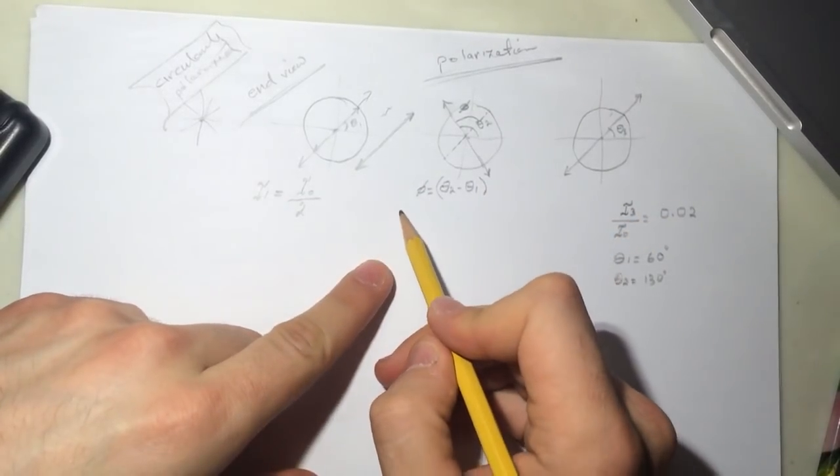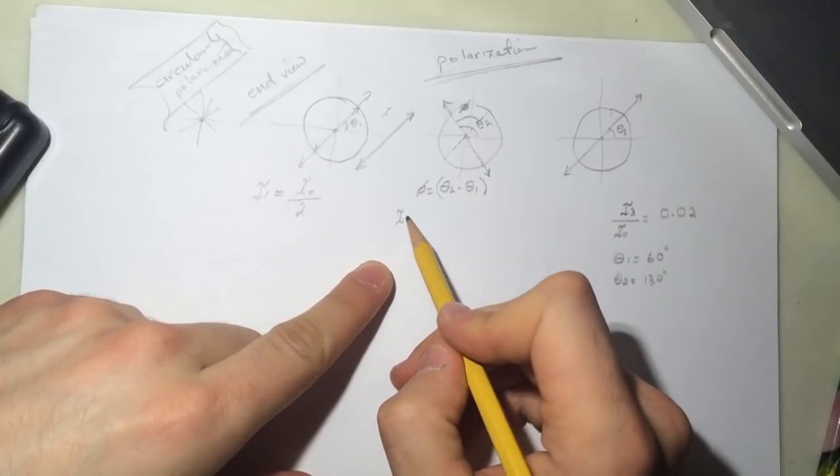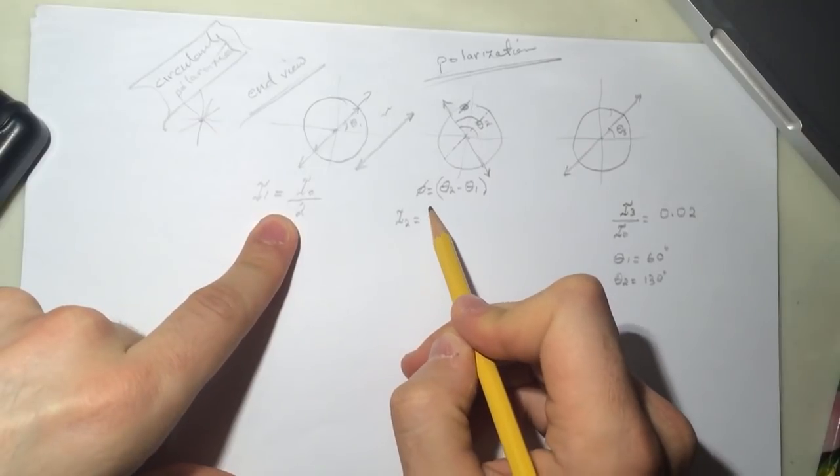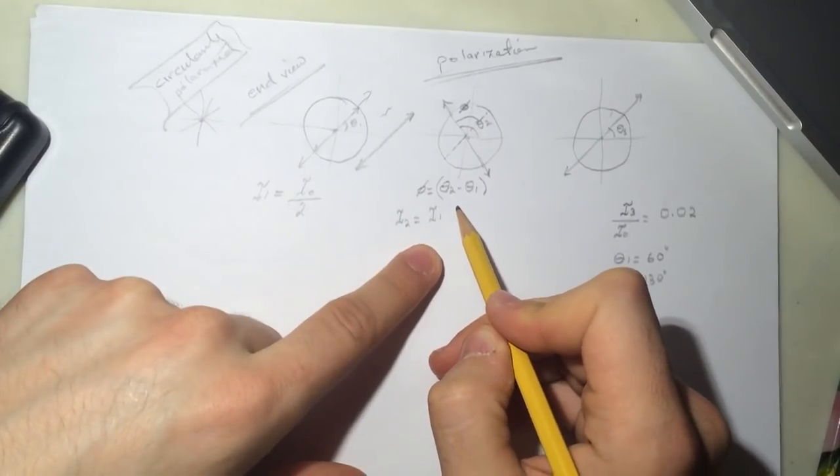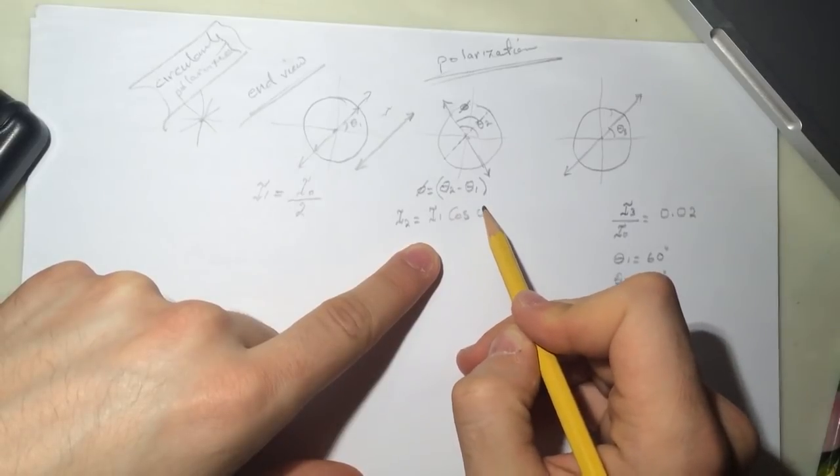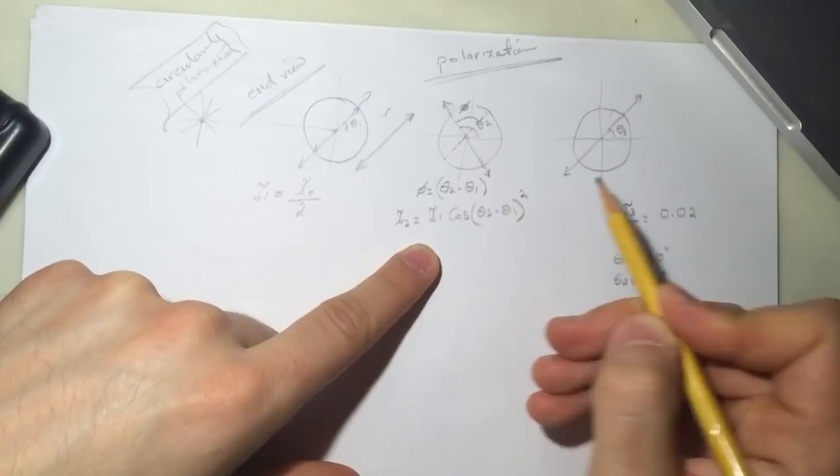So now we're looking at i2. i2 is after it passes this guy. So i2 will be equal to i1 and then cosine of theta 2 minus theta 1 squared.